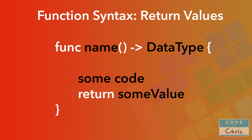Everything remains the same as our basic function definition. But after the two rounded brackets, you have an arrow — that arrow is just a hyphen and a greater-than sign. Followed by that, you have the data type of the value that this function should return. Now that you've specified that this function returns a value, you have to use the return keyword inside of that function to actually return a value of that same data type that you specified.